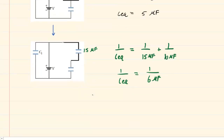We can reciprocate both sides — flip this side upside down to make C_eq over 1, and then flip the other side upside down to get 6 over 1, or just 6 microfarads. So we combine those two, and the equivalent capacitance is 6 microfarads. We'll redraw the circuit again.